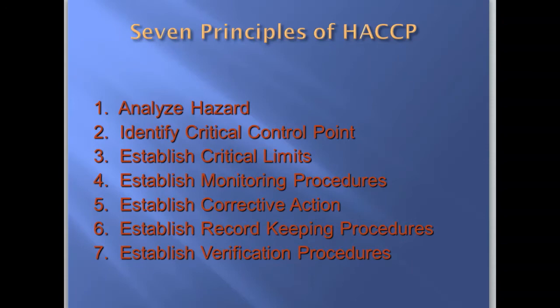The process of hazard analysis follows seven principles. First, analyze the food hazard to identify the critical control point where the hazard can be controlled. Second, establish the critical limits beyond which the hazard level should not go. Third, establish monitoring procedures. Fourth, establish corrective actions. Fifth, establish record-keeping procedures. Sixth, establish verification procedures.